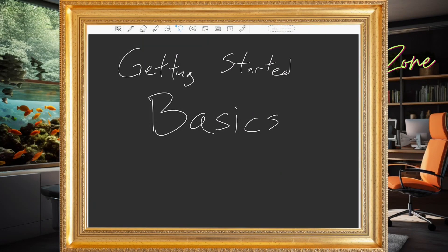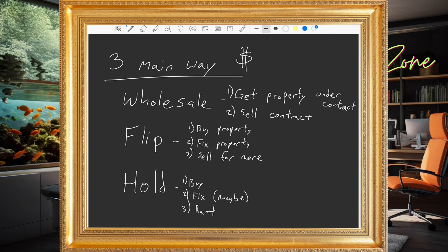Welcome to the first course. This is going to be the basics of real estate investing — minimal edits, but really jam-packed full of useful information if you are just getting started. So let's talk about the three main ways to make money in real estate investing: wholesaling, flipping, or holding.